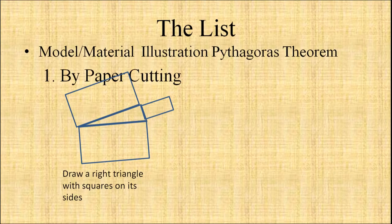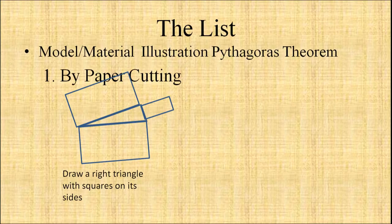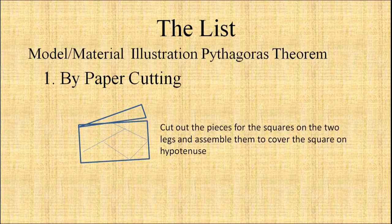We can also have some paper cutting activities. For an illustration of the Pythagorean theorem: draw squares on all three sides of a right triangle. Subdivide the square on the larger leg, then cut the pieces from the squares on the two legs and assemble them to cover the square on the hypotenuse.